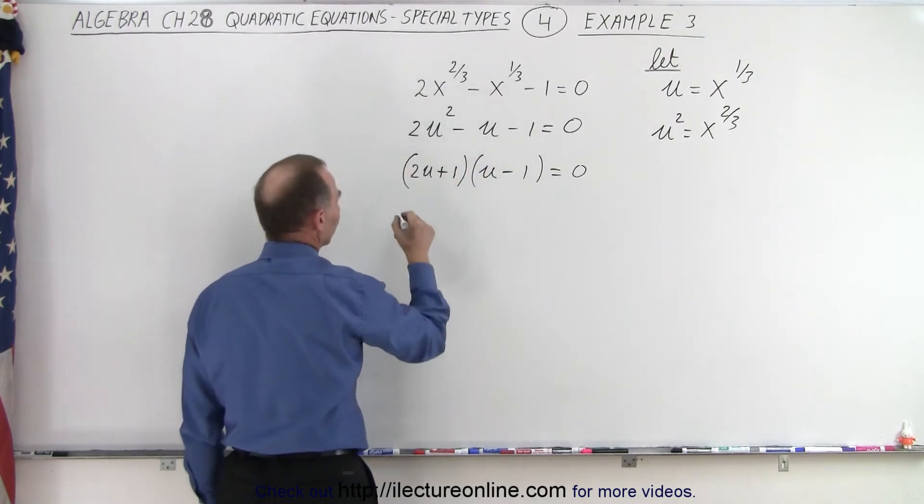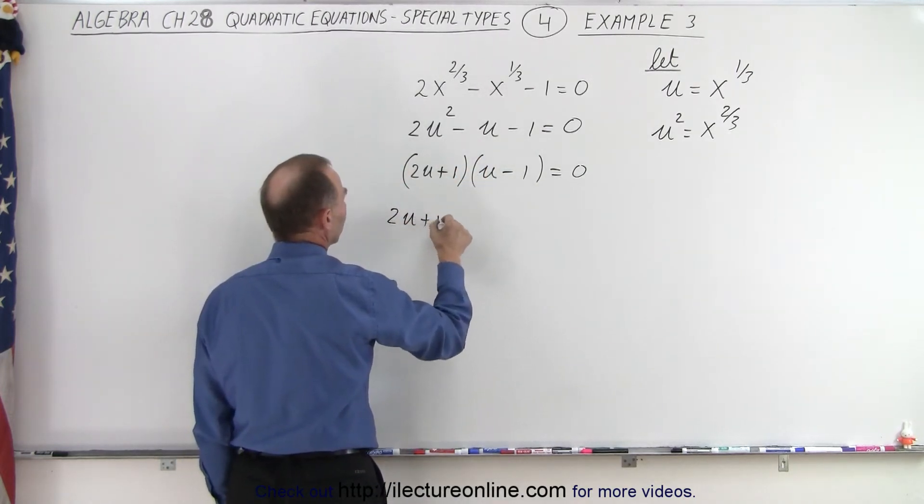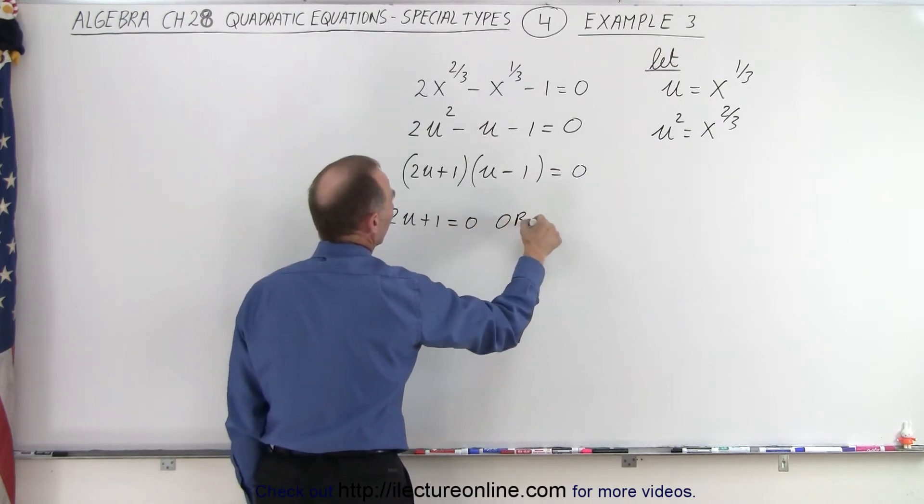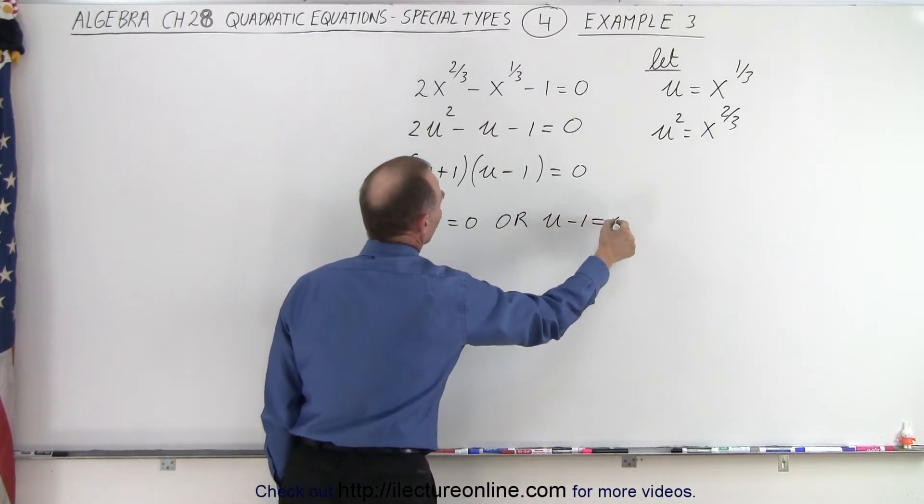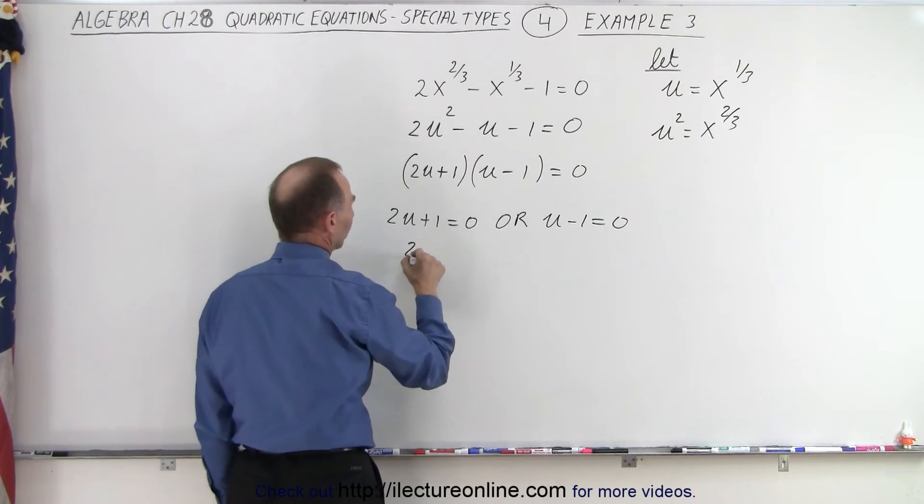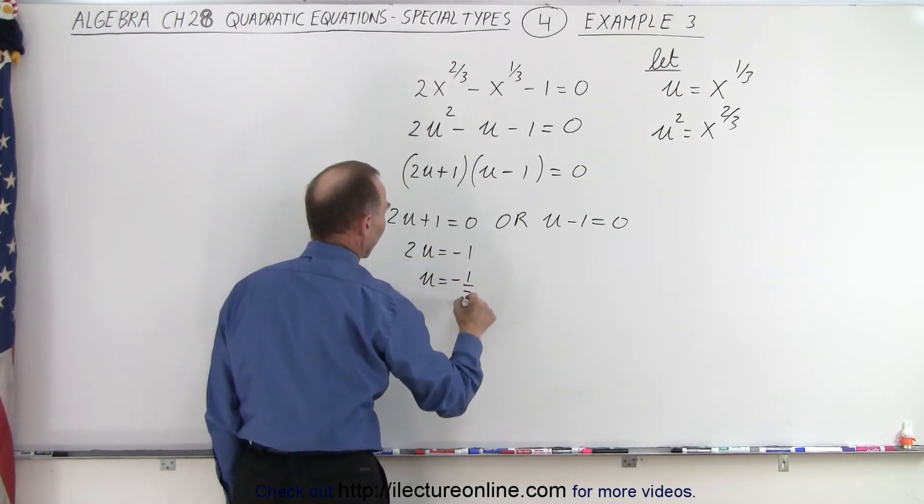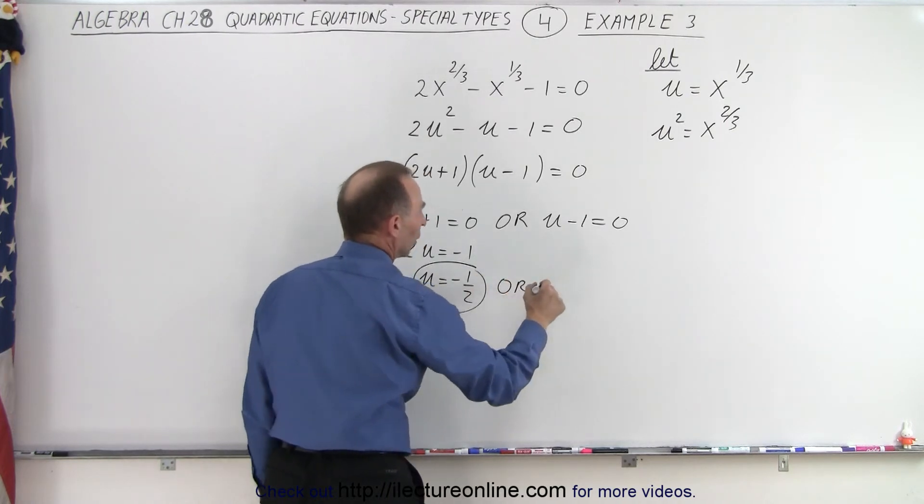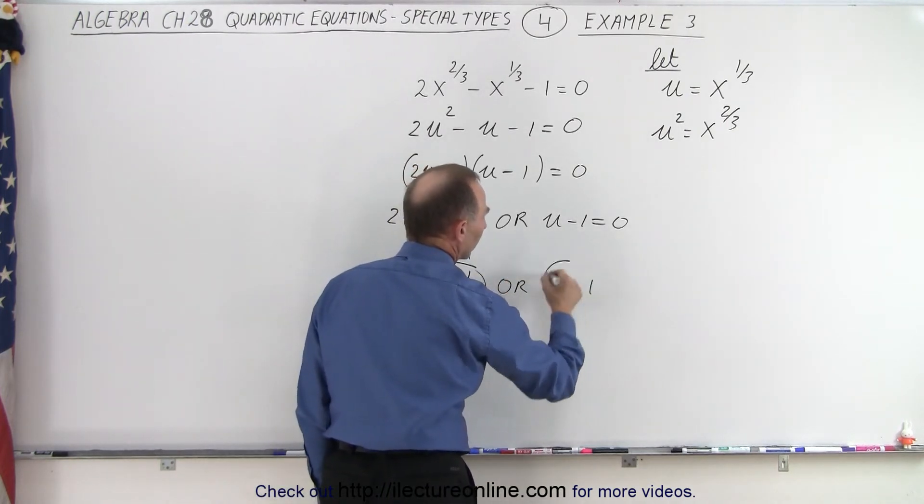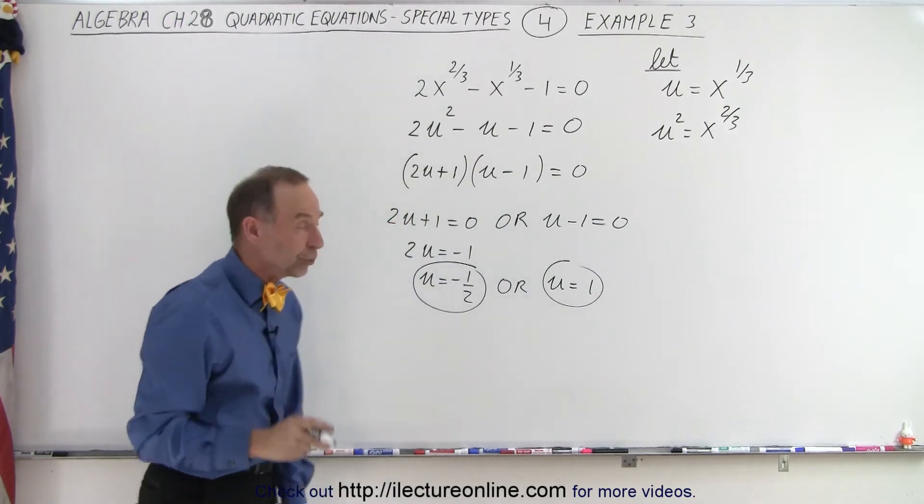So, because of this, I can say that 2u plus 1 equals 0, or u minus 1 equals 0. So in this case, we have 2u equals negative 1, or u equals negative 1 half. In this case, or u equals 1. So those are the two possibilities for u.